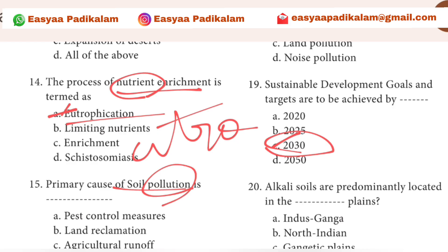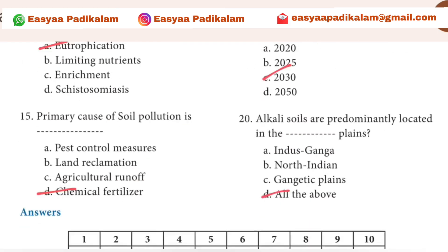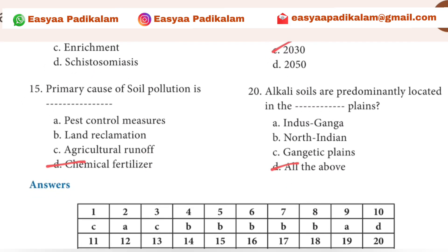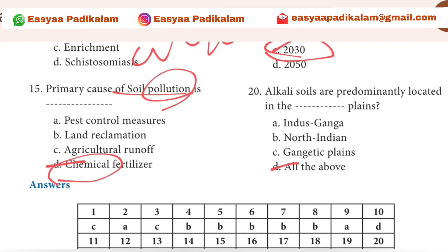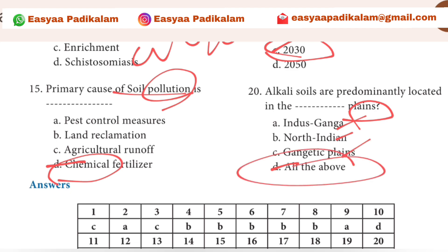That answer is 2030. Five years is 2030. Last question: alkali solids are predominantly located in the plains. Indus Ganga Plane, Northern Plane, Indian Plane, Gangetic Plane — that answer is all of the above options.